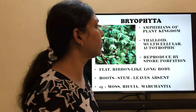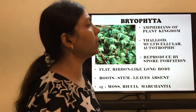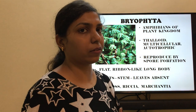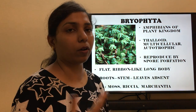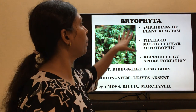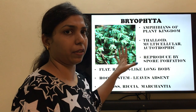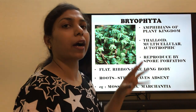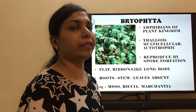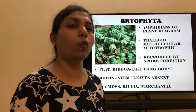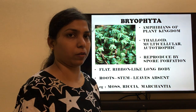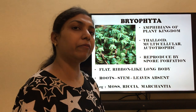Next is Bryophyta. Bryophyta are called the amphibians of the plant kingdom. An amphibian is an organism which can stay in water as well as on land — examples are frogs and crocodiles. Similarly, Bryophyta are considered amphibians among plants because they need land for growing, but when they have to reproduce and produce new organisms, they require water. That is why Bryophyta are called the amphibians of the plant kingdom.